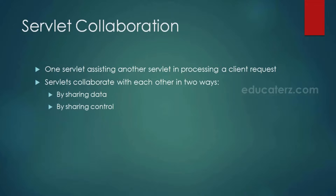When a second customer comes for a loan payment, it is a slightly complex request. The cashier indirectly takes help of the loans officer by using a hard copy of loan details — loan amount, loan account, etc. — without directly talking to the loans officer. When a third customer approaches for a DD request, it is a complex request and the direct involvement of other officers is required. The cashier, loans officer, and other officers are all analogous to servlets.